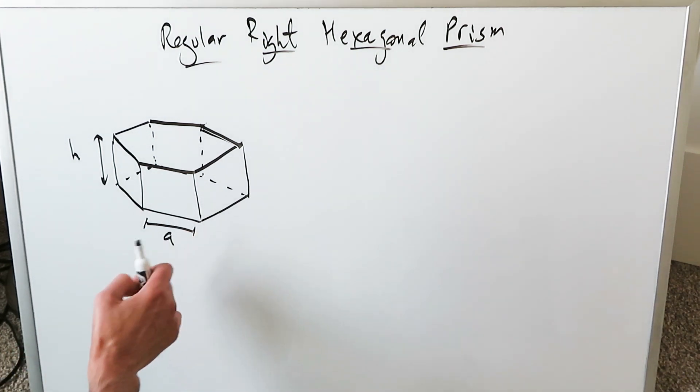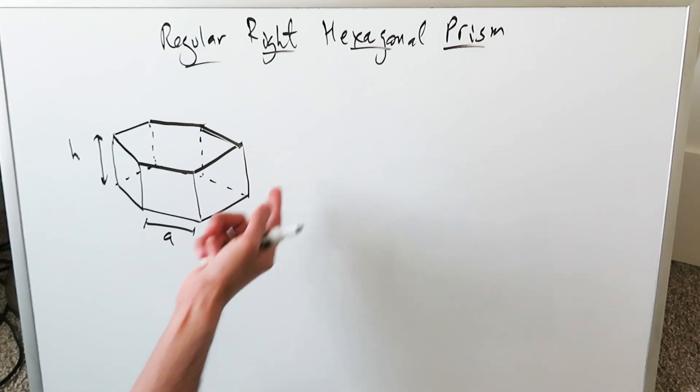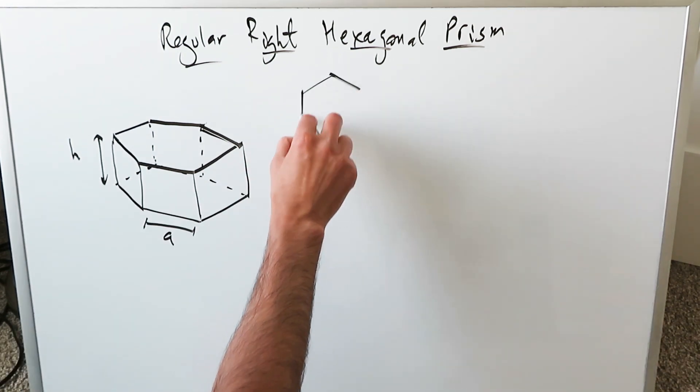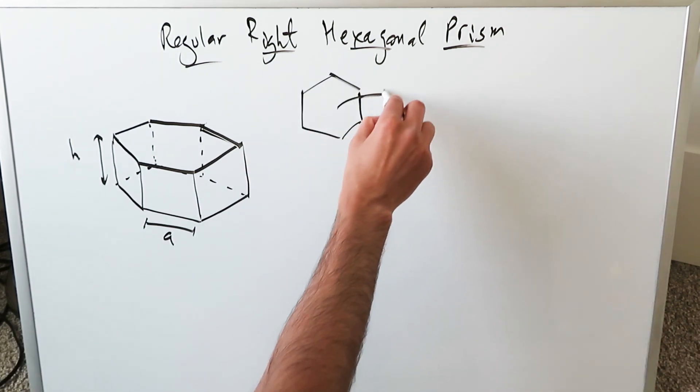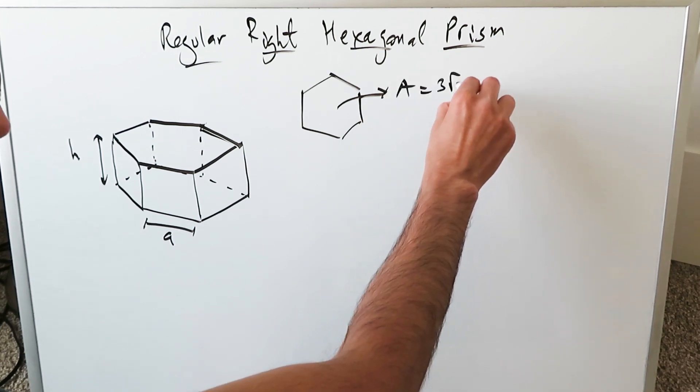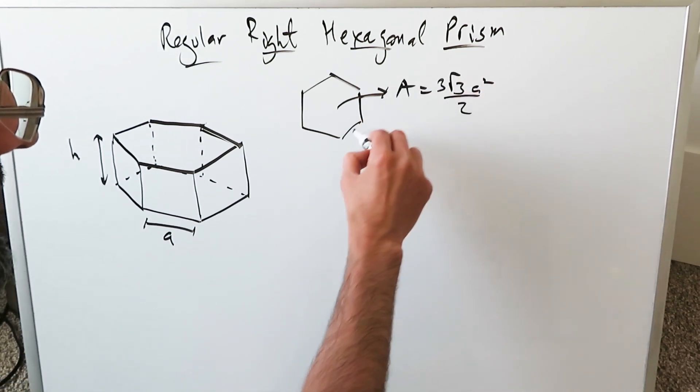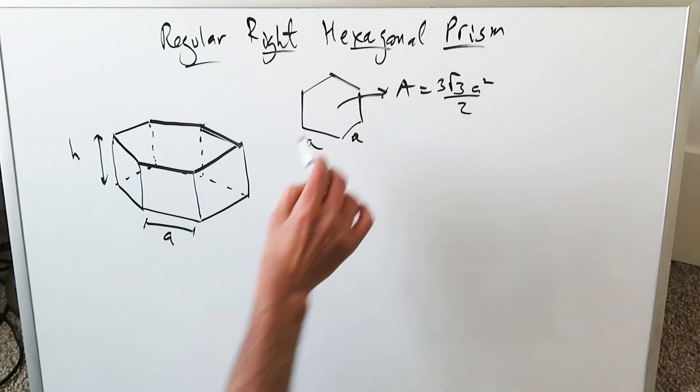We have here a hexagonal prism. Our sides are A. The height is H. I've presented a video on how you can determine the area of this. The area has been determined to be 3 root 3 A square over 2, and these are your sides and they are A.